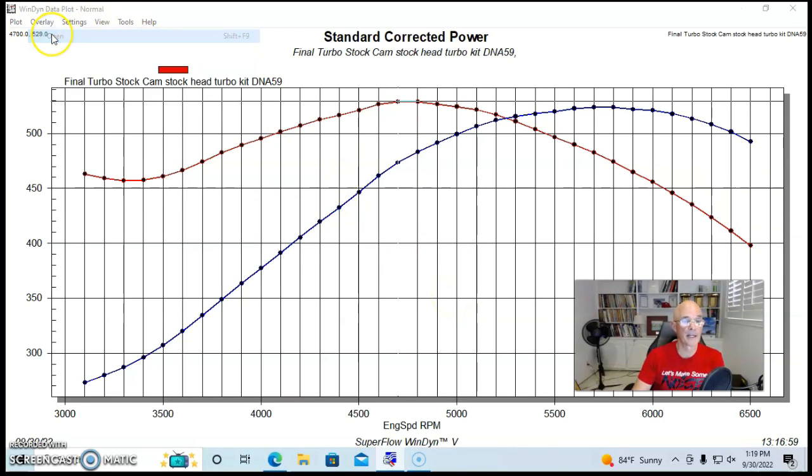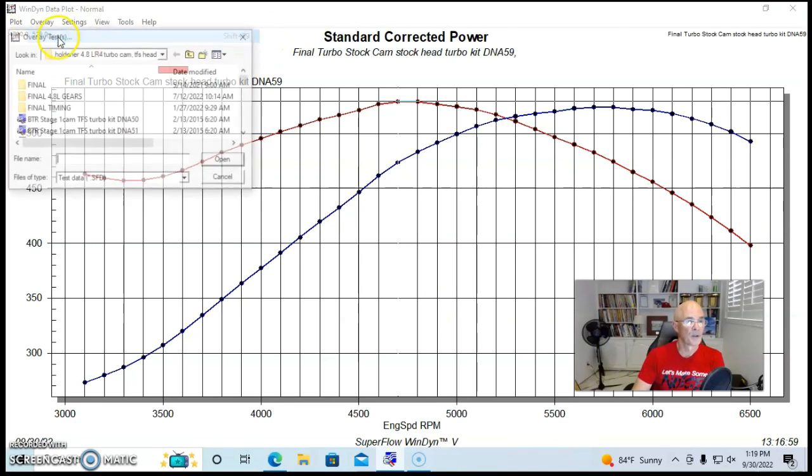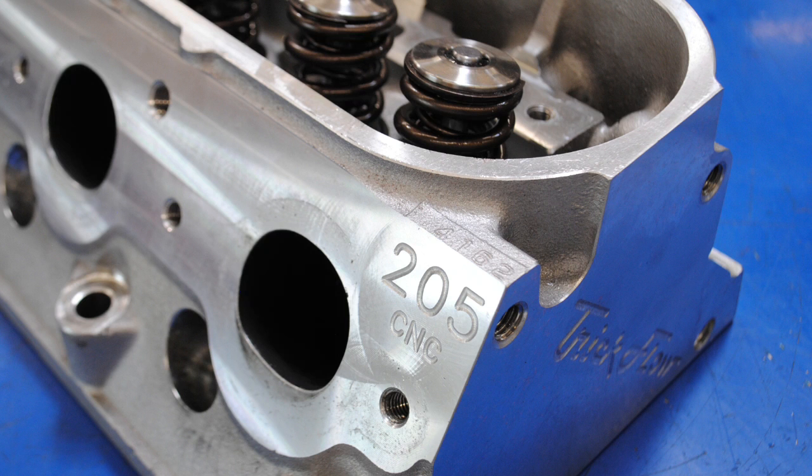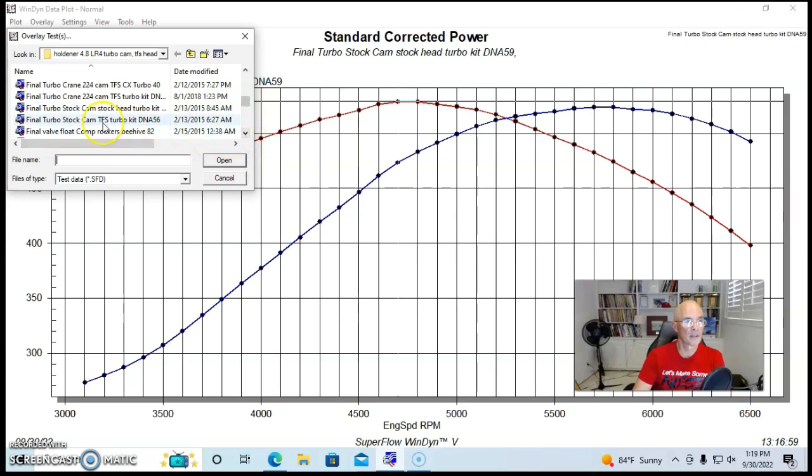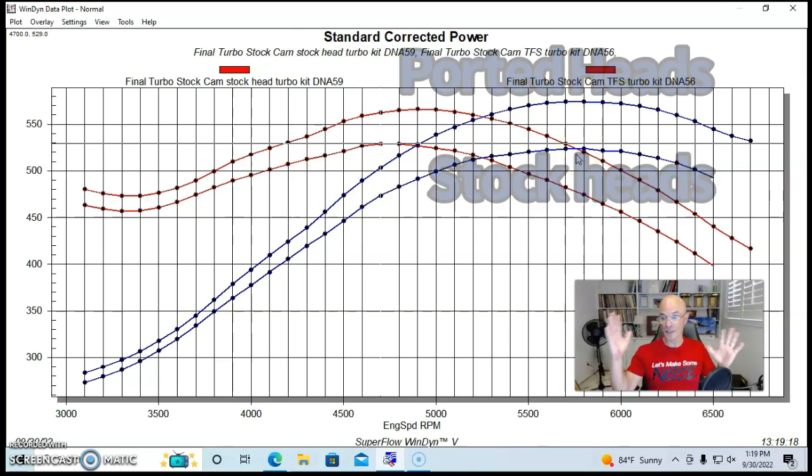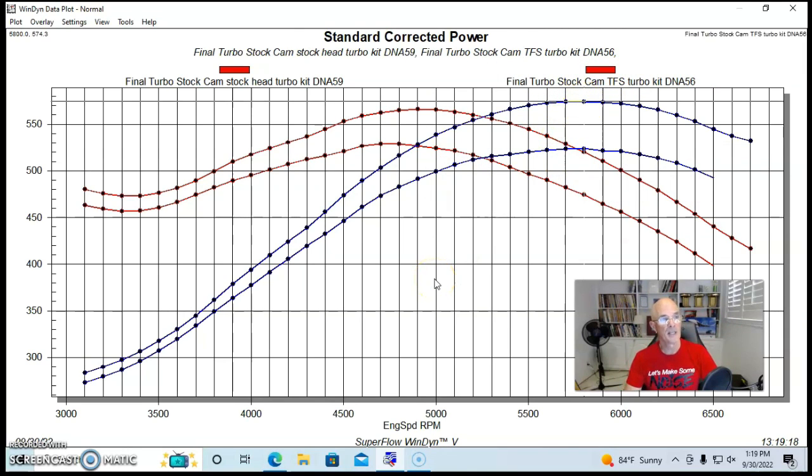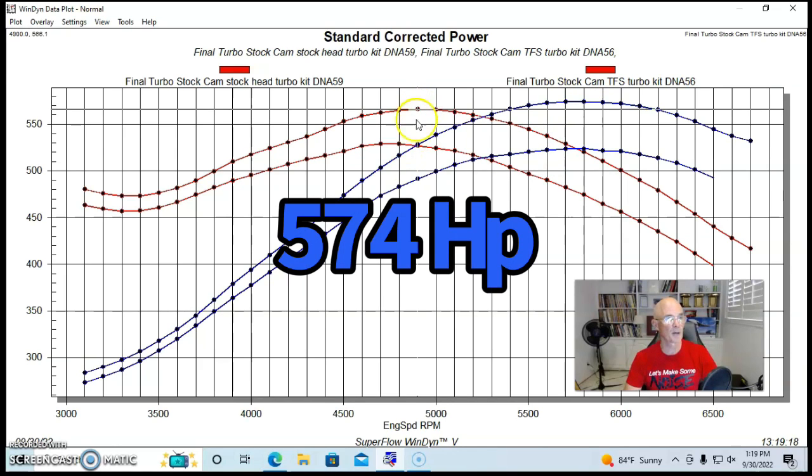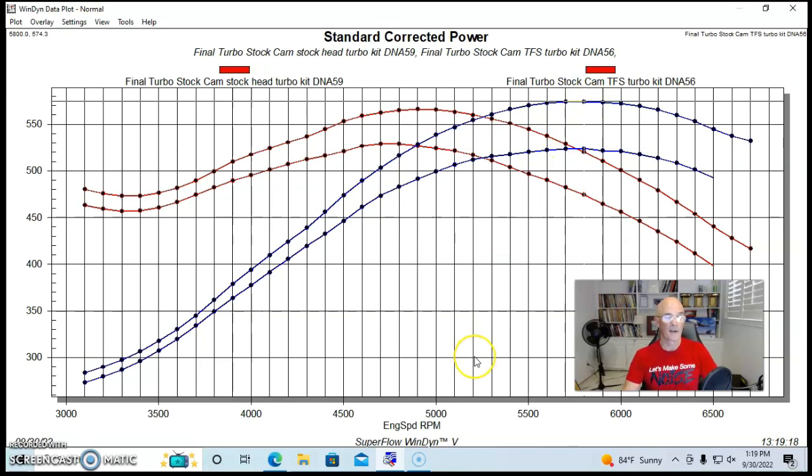And here's what happened after we upgraded the stock 706 heads to a set of Trick Flow heads. Let's see here. And you can see we picked up quite a bit of power. We've made no changes to the turbo or the wastegate or anything. All we did was do the head swap to the Trick Flow 205 heads.